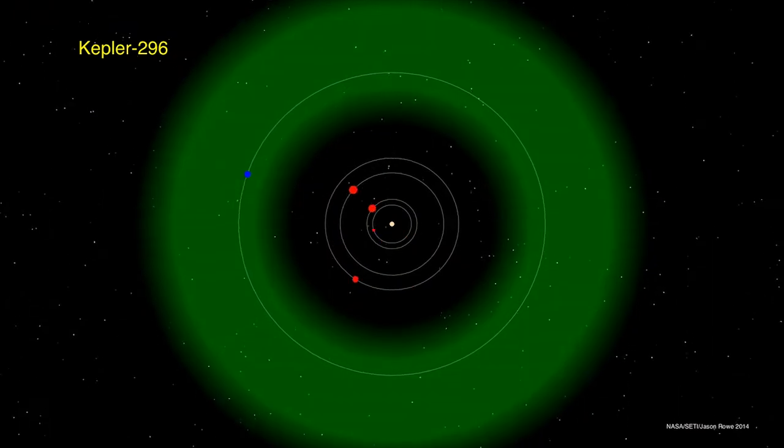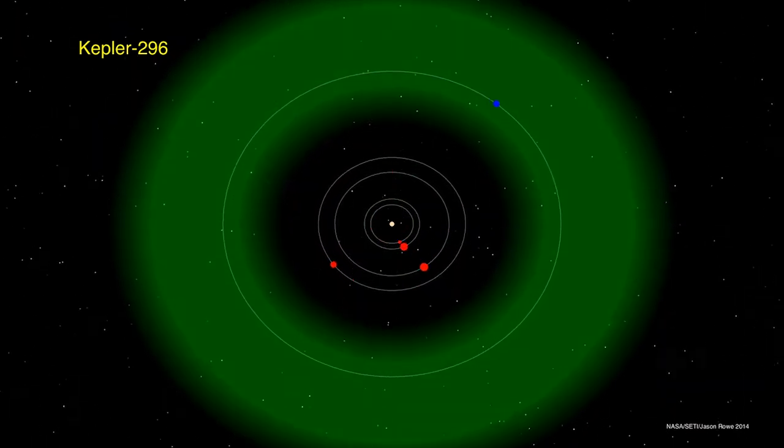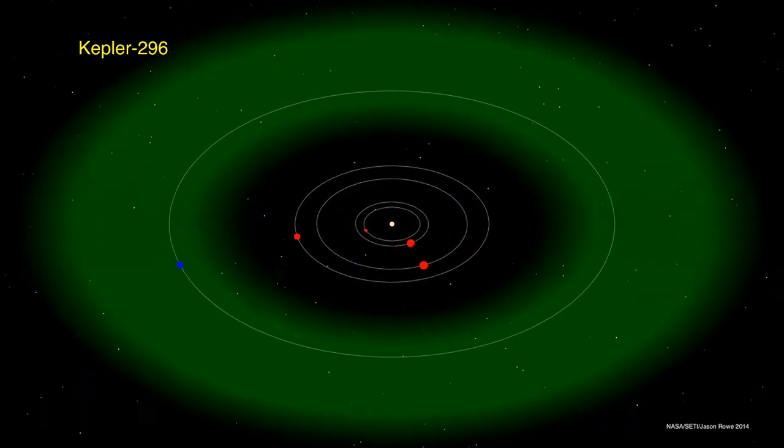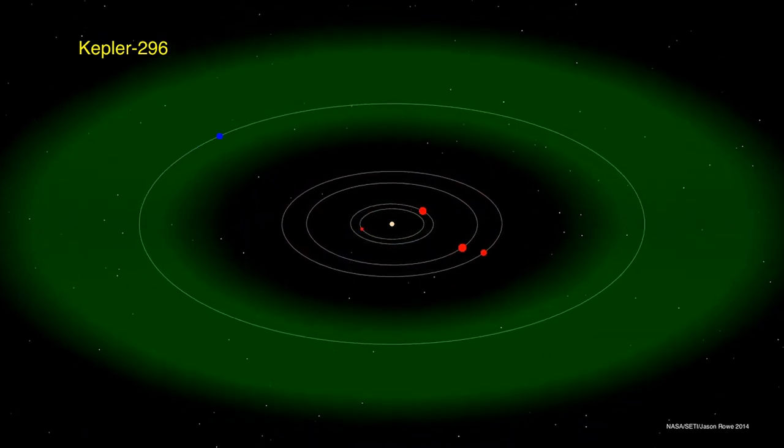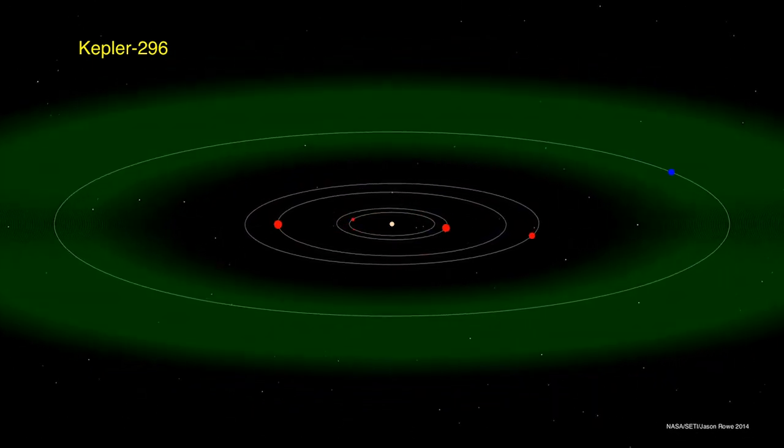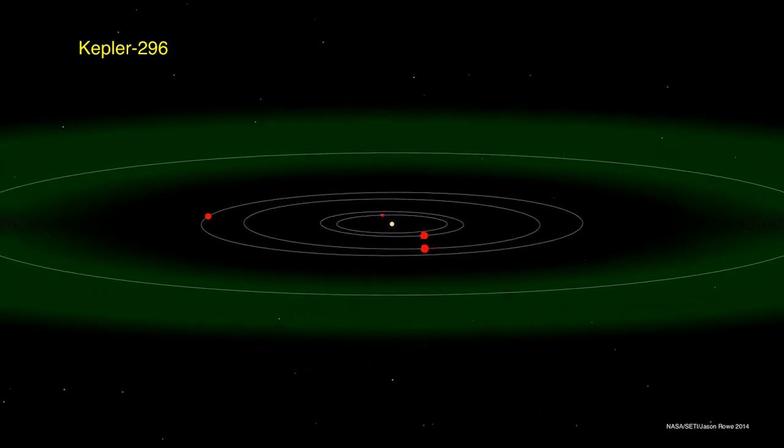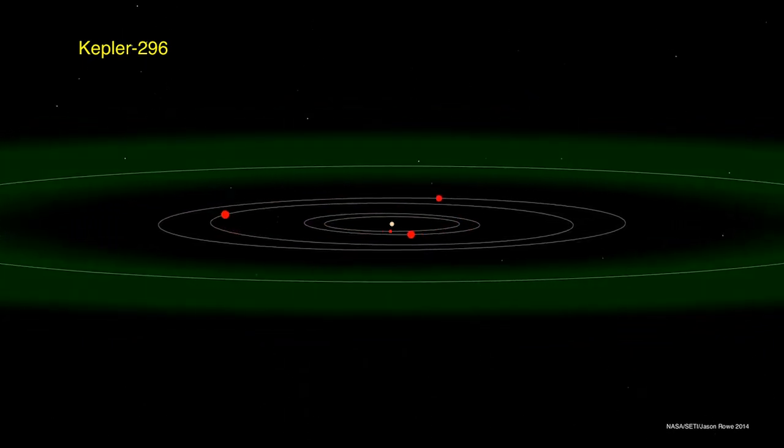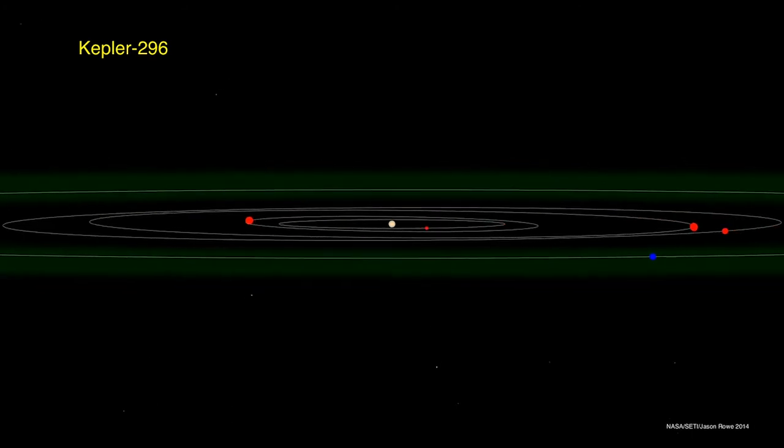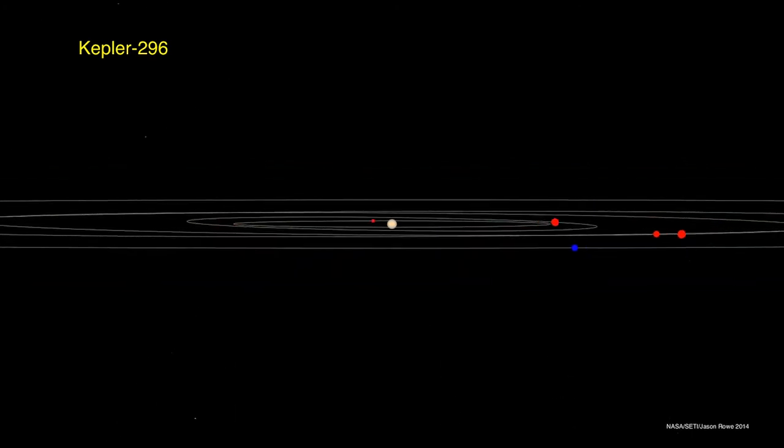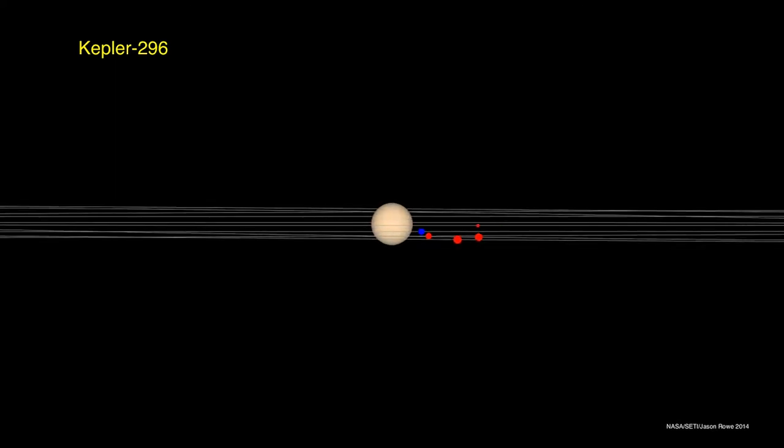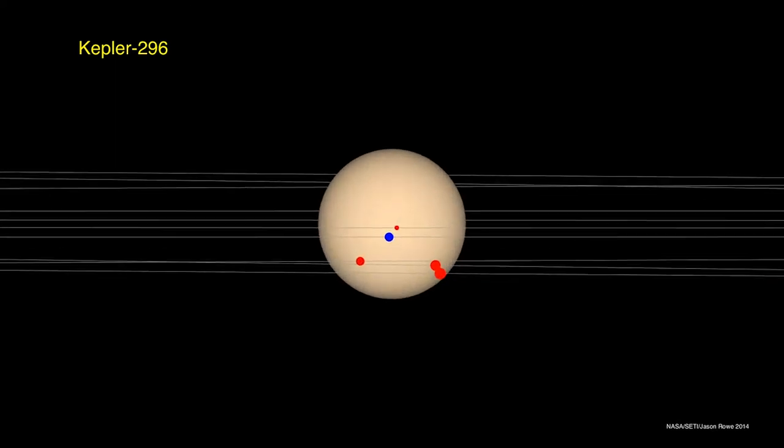As an example of the multiplicity of exoplanets found by Kepler, let's look at the Kepler 296 system, with five exoplanets confirmed and several other possibles. One of these exoplanets, the one in blue, is in the habitable zone of this star. The others are on inner orbits, too hot to be in the habitable zone. We see here the equatorial view, which is the way the satellite sees them, such that they all register small transit signals or eclipses by crossing the face of their star.